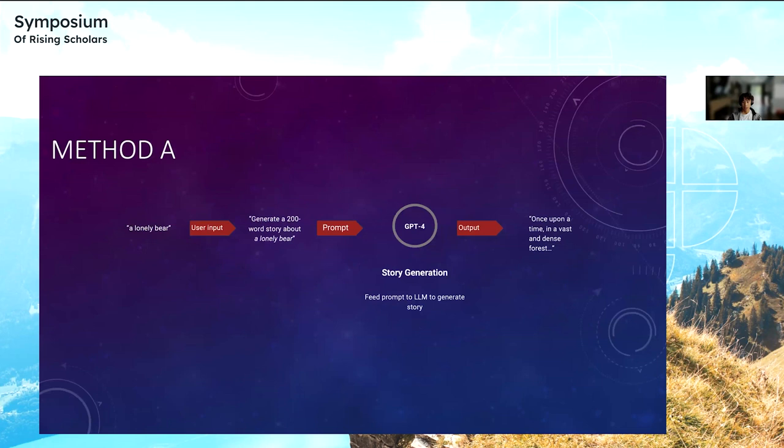I coded up three AI models using three methods, which I will refer to as A, B, and C. Let's start with method A. For the sake of explaining the methods, I wanted to create a story about a lonely bear. For method A, a user would provide an input like a lonely bear. Then the user input gets converted into a prompt, generate a 200-word story about a lonely bear. That goes into a large language model like GPT-4, and out goes your story.